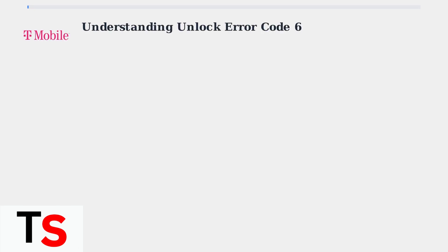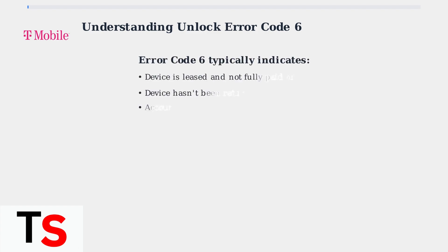T-Mobile Unlock Error Code 6 is a common issue that prevents users from unlocking their devices. Understanding what this error means and why it occurs is the first step to resolving it. Error Code 6 typically means your device is locked because it's a leased device that hasn't been returned or fully paid off. It can also indicate there are account-related issues preventing the unlock.